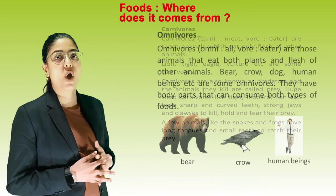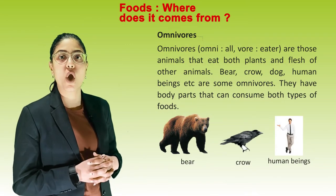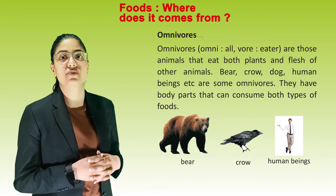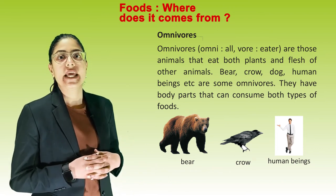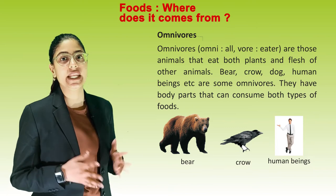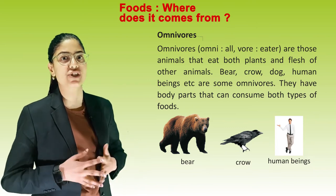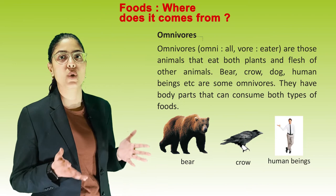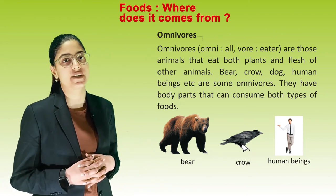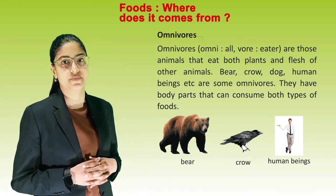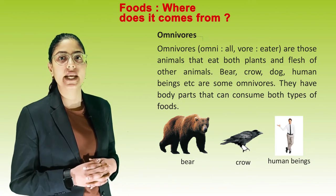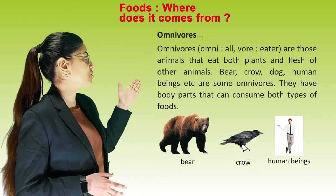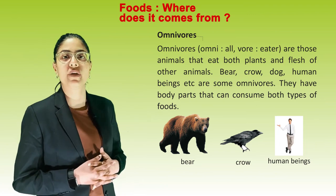Omnivorous — 'omni' means all and 'vore' means eater. Omnivorous are those animals that eat both plants and flesh of other animals. Bear, dog, human beings, etc. are some omnivorous. They have body parts that can consume both types of food. See these pictures of some omnivorous animals.